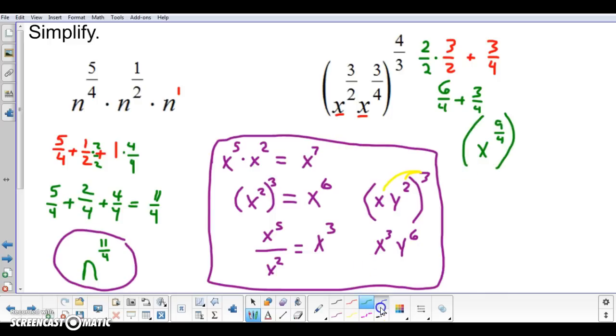Now x to the nine-fourths is still raised to the four-thirds power. Let's put a four-thirds out here. And now, in order to simplify a power raised to another power, I have to multiply the exponents together.